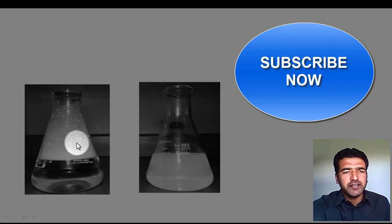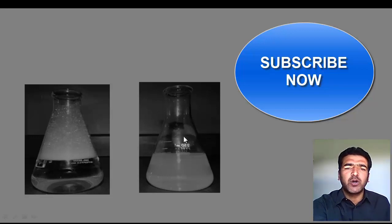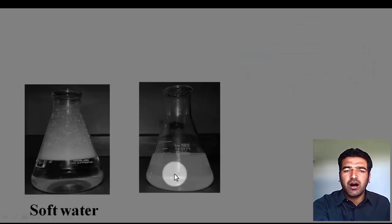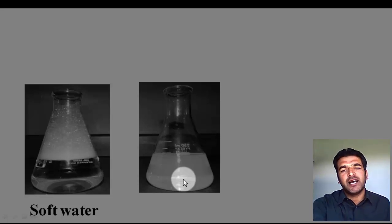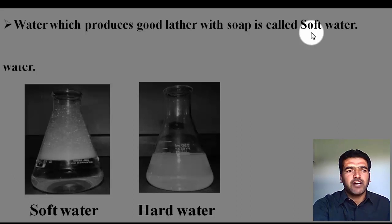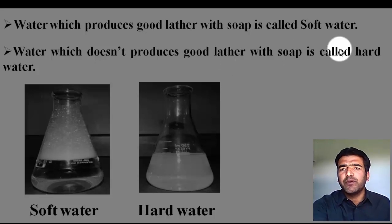In flask number one, a lot of foam has been produced — a lot of lather has been produced once soap was added. While in flask number two, foam has not been produced and lather has not been produced upon the addition of soap. So this water which produces lather with soap is called soft water, and this water which does not produce lather or foam with soap is called hard water.